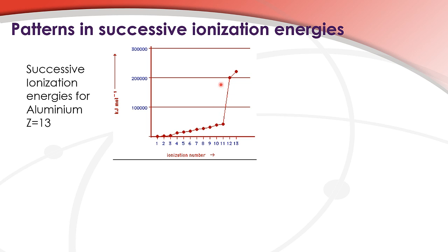Next we see a big jump in ionization energy. The reason for this is that the electrons from energy level two have all been removed, so we are now removing electrons from energy level one. Energy level one is much closer to the nucleus and there's a much stronger electrostatic attraction between the positive nucleus and the negative electrons. These two electrons are being removed from energy level one, and as it's closest to the nucleus, it requires much more energy to remove them.